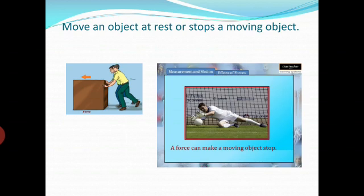The third effect is that force can move an object which is at rest, or it can stop a moving object. Here are two examples. First, consider a heavy box which is at rest and two boys are pushing it. When they apply some force on that box, the box starts moving — so force can move an object that was at rest. The second example is that a goalkeeper is trying to stop a moving ball coming toward him by using his hands. So we can say that force can make a moving object stop.